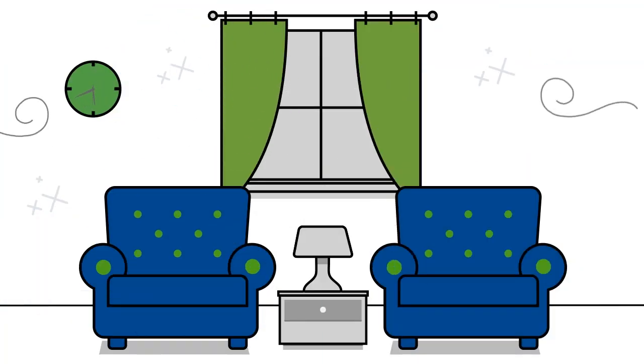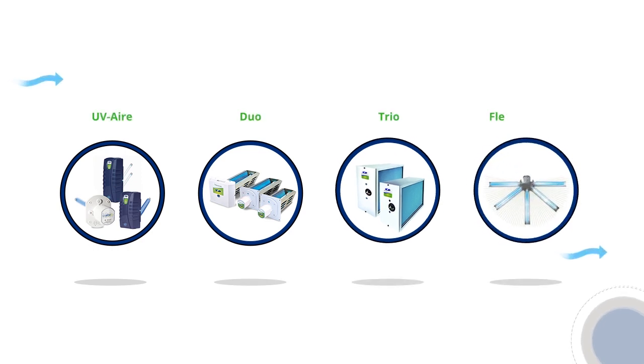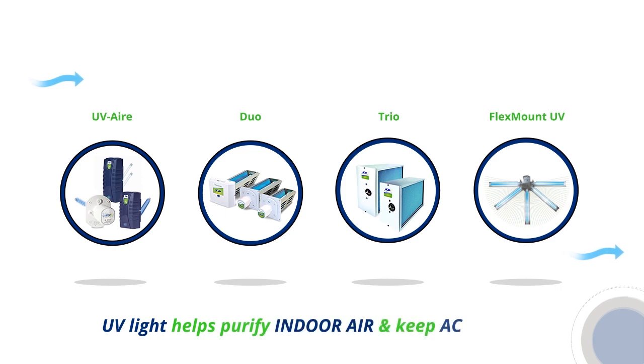Field Controls manufactures a full line of whole house air purification systems that feature UV lamp technology. Depending on the size of the home, a UV air, duo, trio and flex mount UV will help purify indoor air and keep AC coils clean.